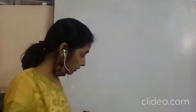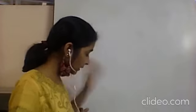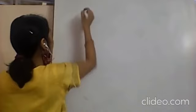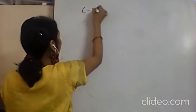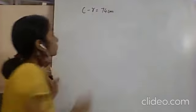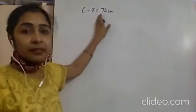We are on Exercise 15.3. The second question states that the difference between the circumference and radius of a circle is given to us. In short, C minus r is equal to 74 centimeters — the circumference minus the radius difference is 74 centimeters.